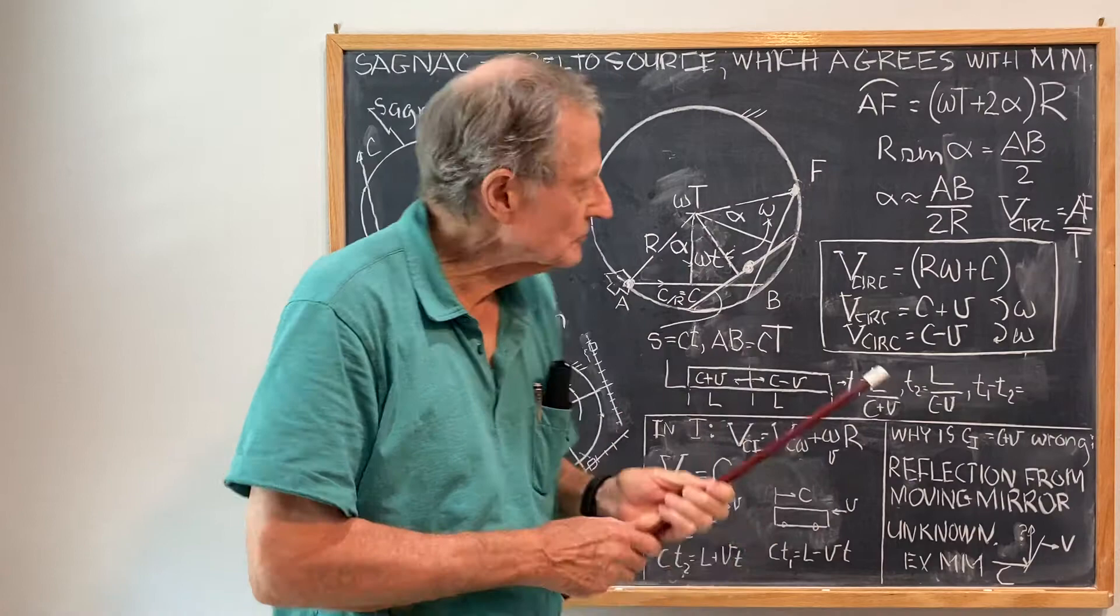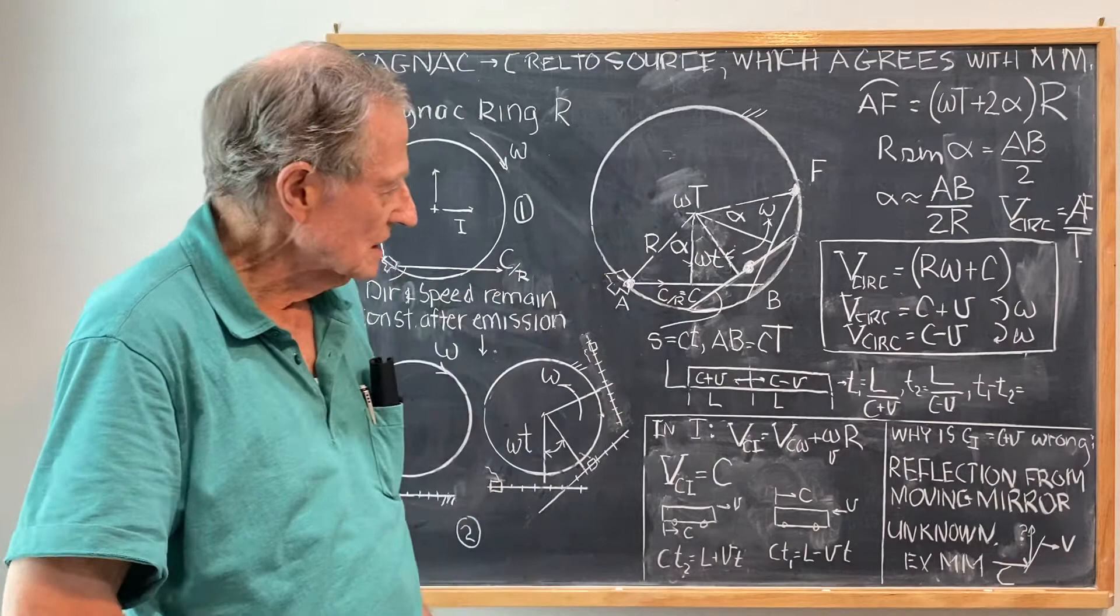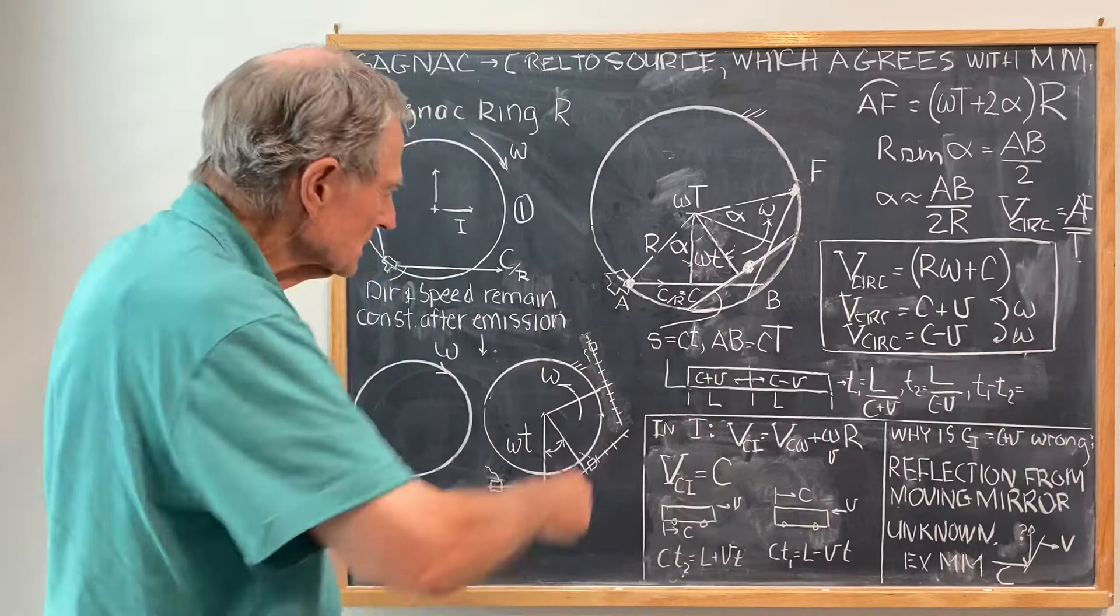That's the relative, that's the circumferential velocity viewed from the ring. With that now, you can do the calculation that I've done over and over.